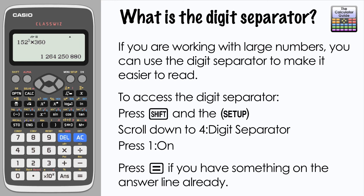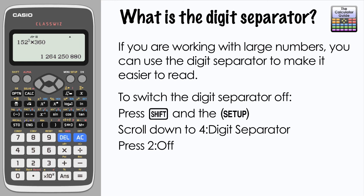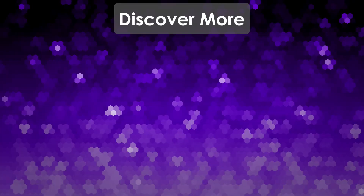Small numbers will just be displayed as a continuous series of digits. If you want to switch the digit separator off, you just reverse the process: Shift, Setup, digit separator, and then press 2 to switch that off. There we go — using the digit separator to display larger numbers and making them easier to read.